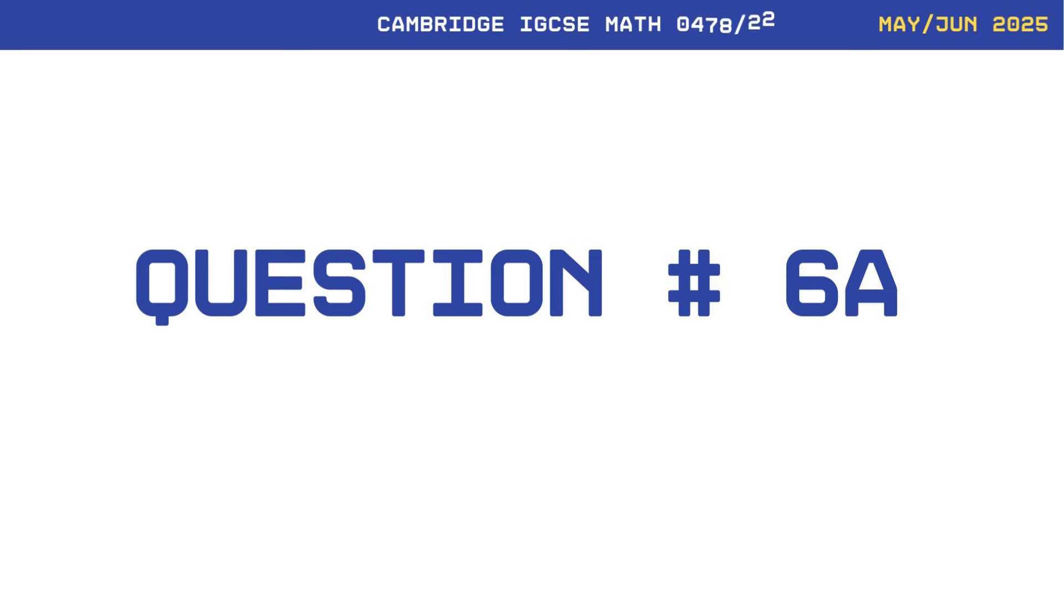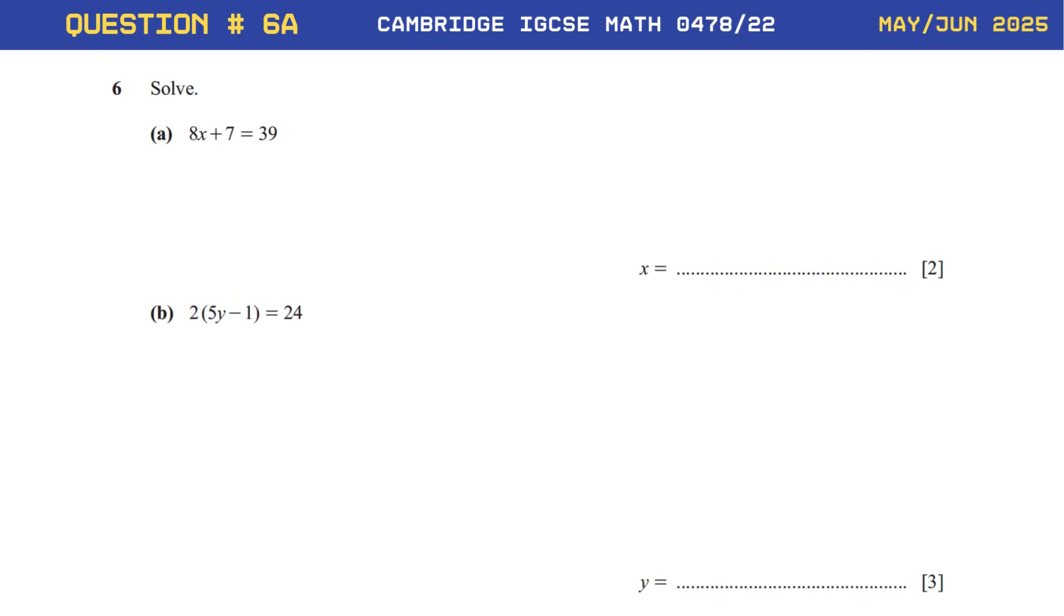Question number 6, part A. Solve the equation 8x plus 7 equals 39. As the first step,